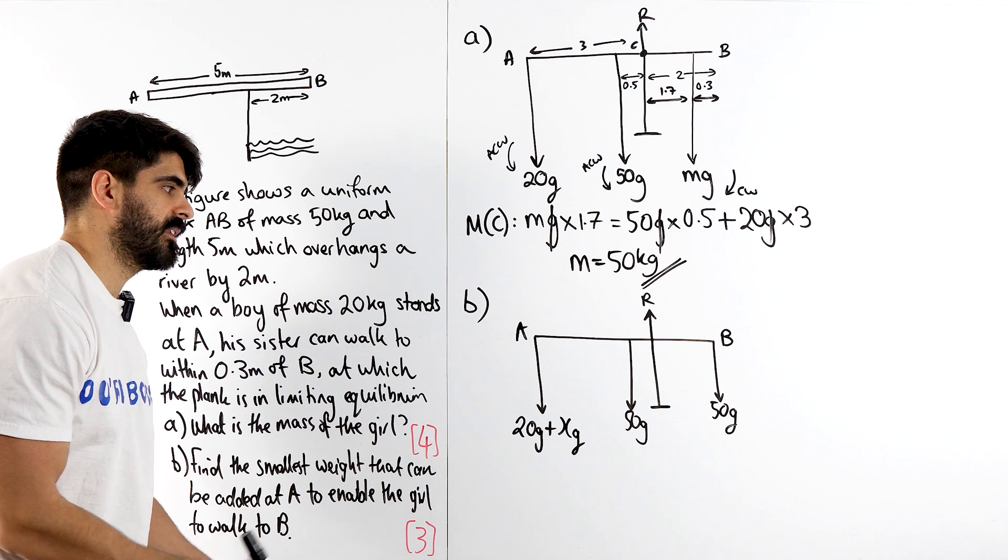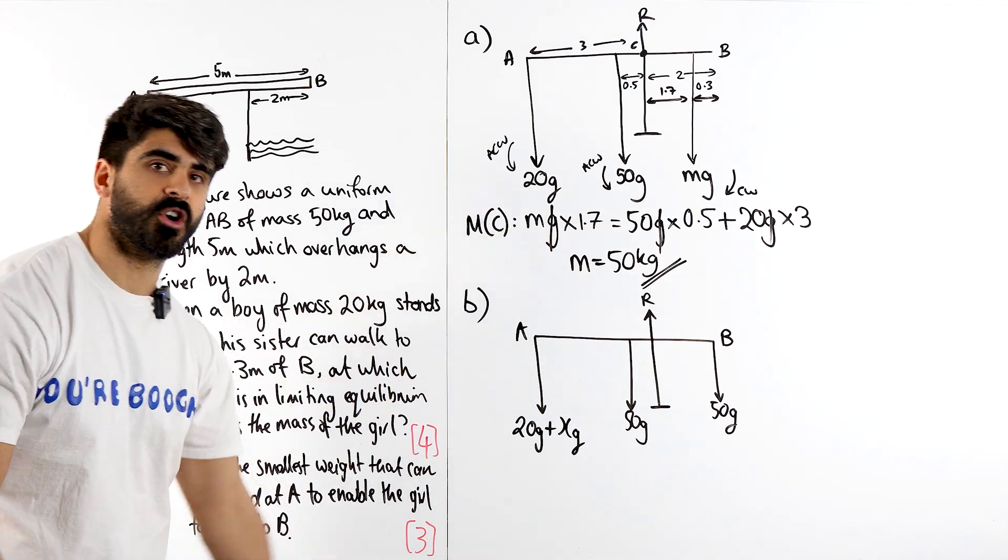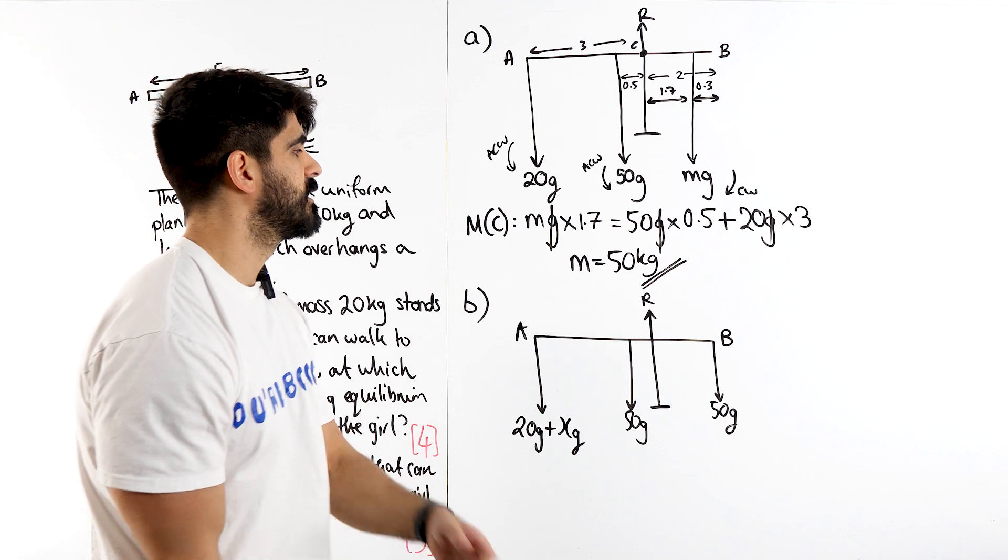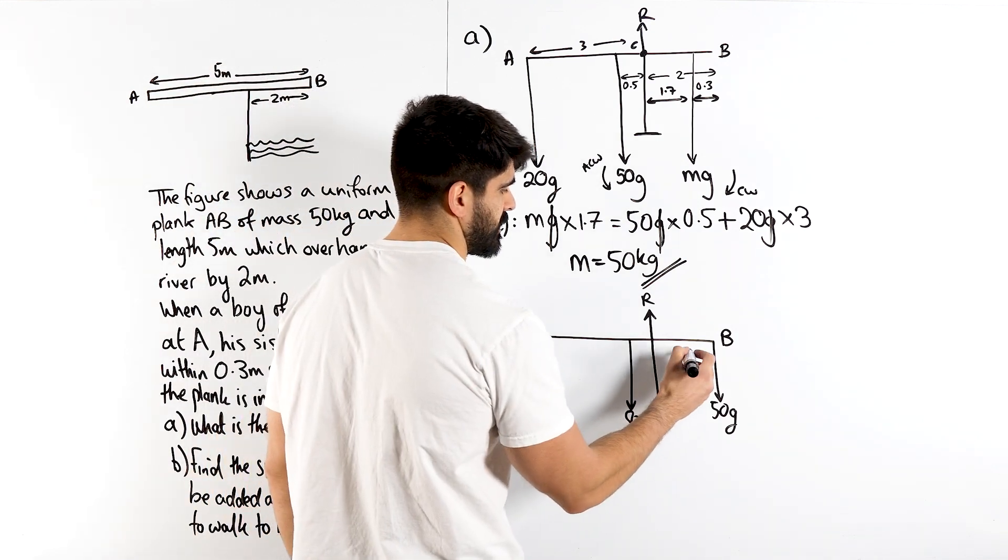We basically do the exact same thing. Nothing has changed. This is why it's worth less marks. We're doing the exact same working. It's very common in these moments questions. They're literally making you do the same thing twice. The only difference is, we've added this XG. But this distance is now 2.